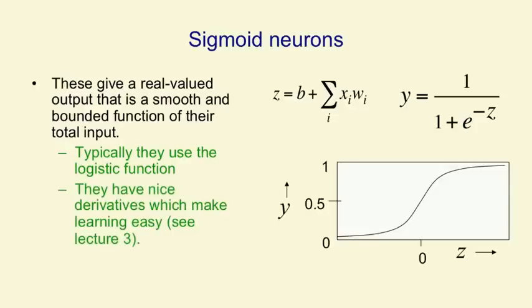When the total input's 0, e to the minus 0 is 1, so the output is half. And the nice thing about a sigmoid is it has smooth derivatives. The derivatives change continuously, and so they're nicely behaved, and they make it easy to do learning, as we'll see in lecture 3.